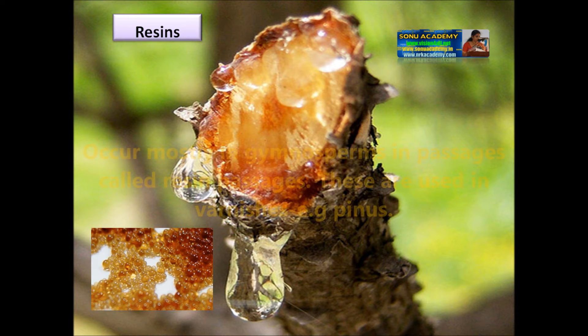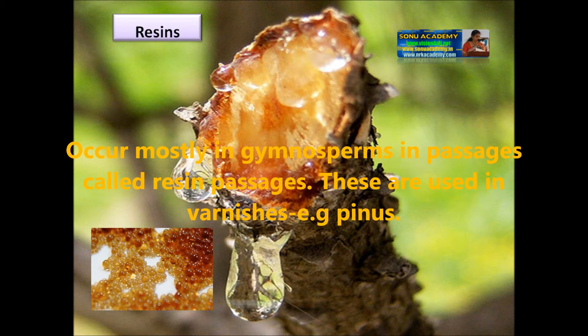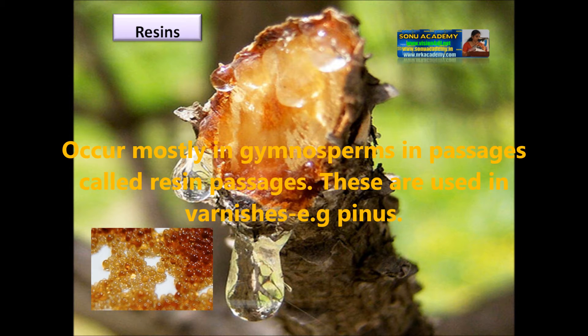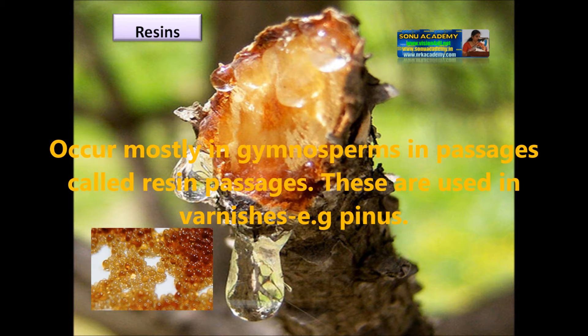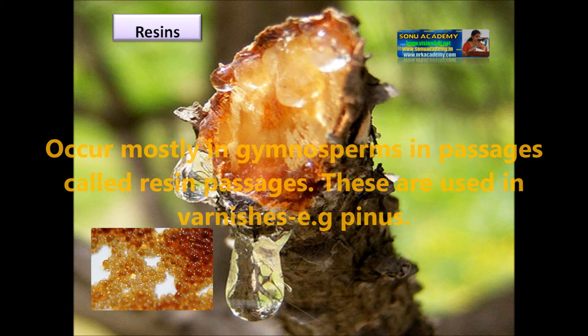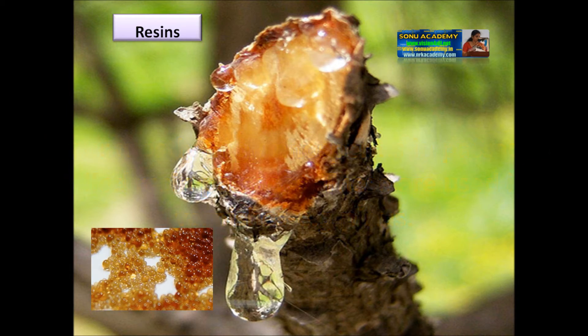Resins occur mostly in gymnosperms in passages called resin passages. They are used in varnishes. An example is pinus.